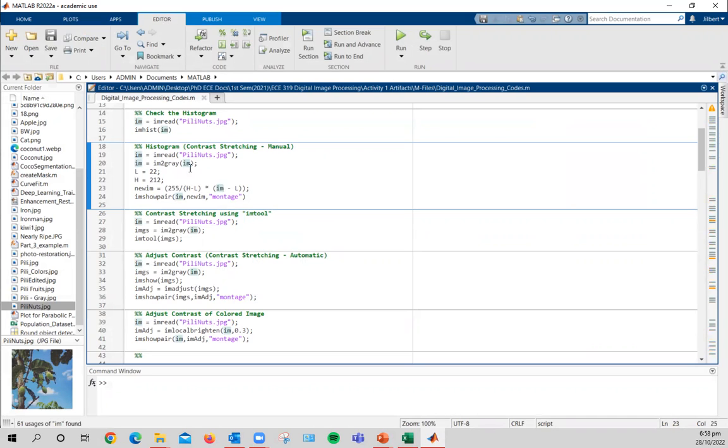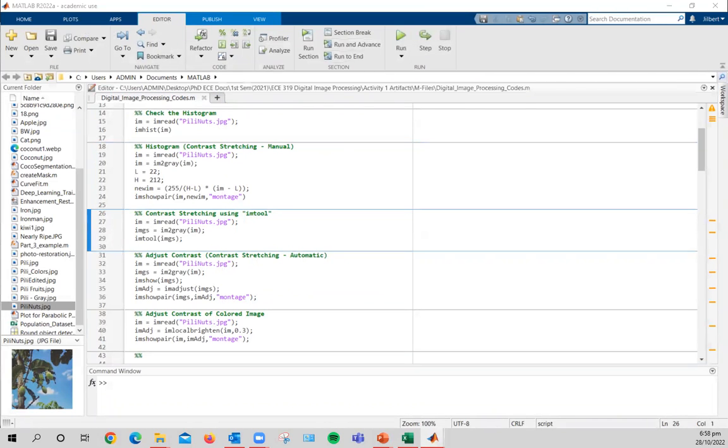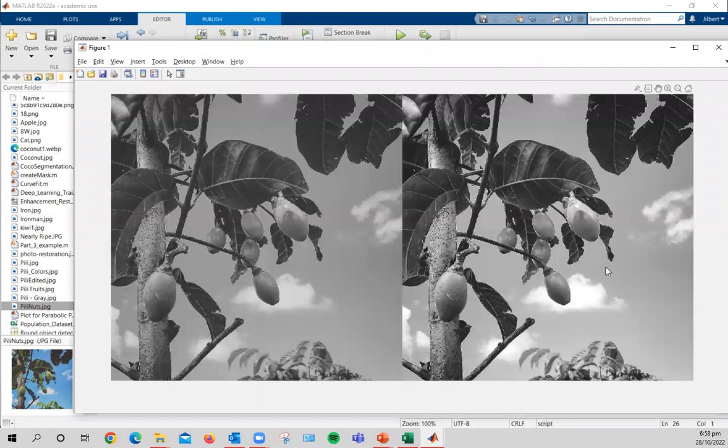And then applying the formula 255 divided by H minus L multiplied by the image, which is IAM minus L or the lower limit. And then we use the formula IAM show pair to definitely have an image at hand. So running this code, we have here a stretched image from our original image. As you can see, it is enhanced from its original image. Looking at this more crisper versus the original one.